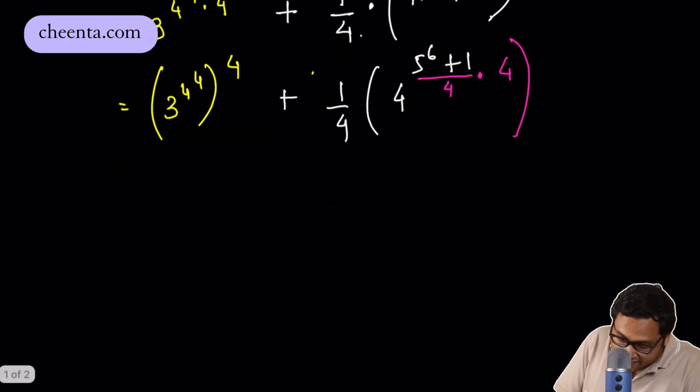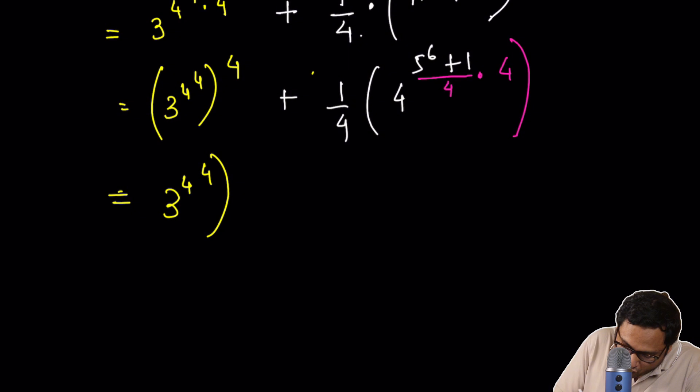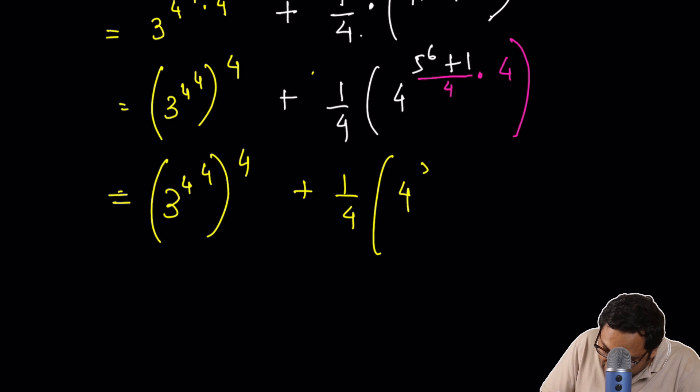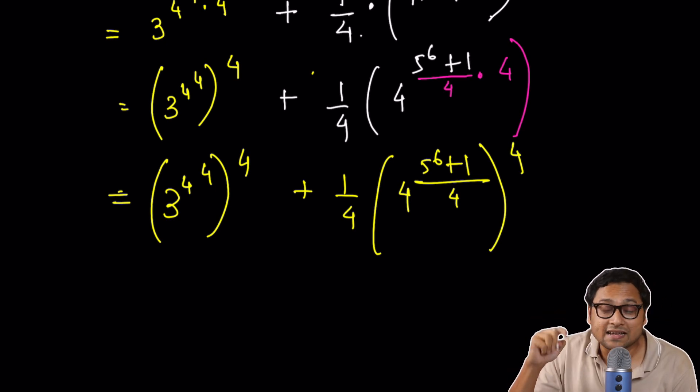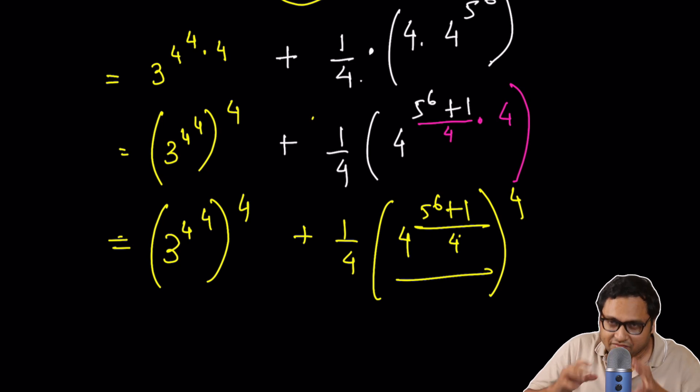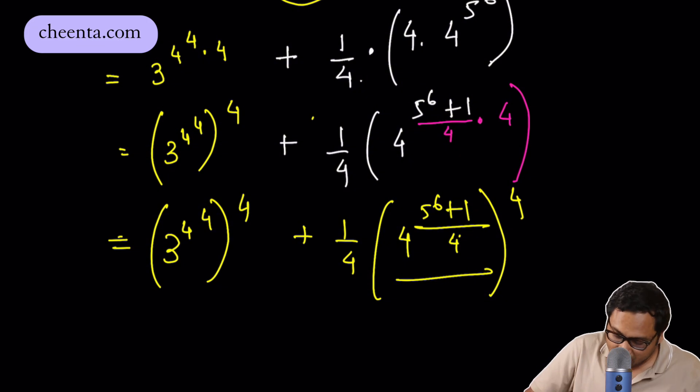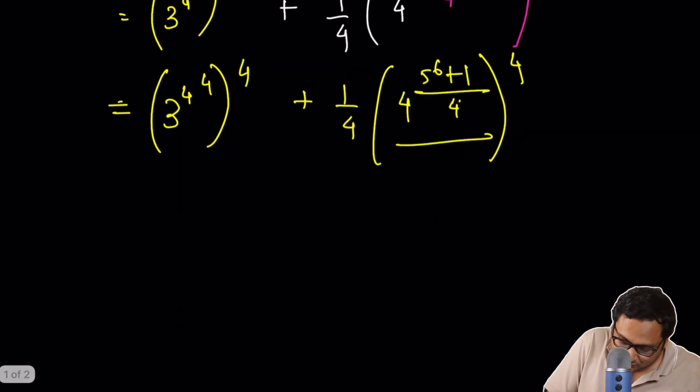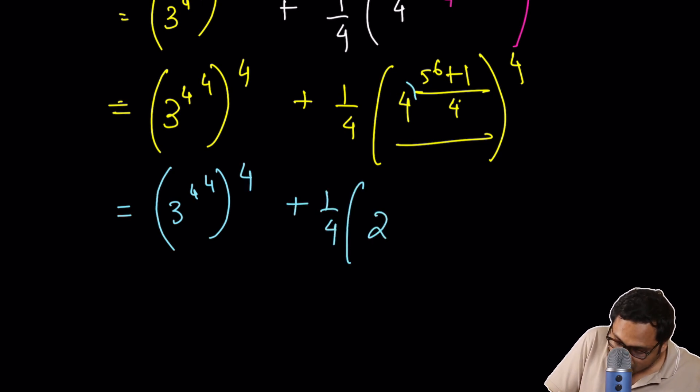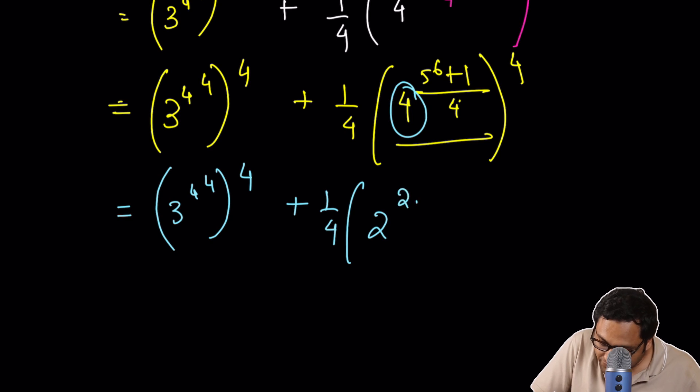So we are almost there. This is 3 to the power 4 to the power 4 raised to the power 4 plus 1 fourth of 4 to the power 5 to the power 6 plus 1 divided by 4, 4 to the power 4. So is this a proper number? Because I have created sort of artificially 1 fourth of something raised to the power 4. But is this a proper number? Well, you can see in a second it is because 3 to the power 4 to the power 4 raised to the power 4 plus 1 fourth of 2 square.